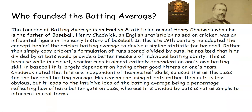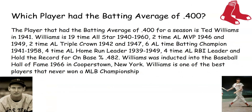Which player had a batting average of .400? The player who had a batting average of .400 for a season was Ted Williams in 1941, and he's the only player to do it. Williams is a 19-time All-Star, two-time AL MVP, two-time AL Triple Crown winner, six-time AL batting champion, four-time American League home run leader, four-time American League RBI leader, and holds the record on-base percentage of .482. Williams was inducted into the Baseball Hall of Fame in 1966 in Cooperstown, New York, and is one of the best players who never won an MLB championship.